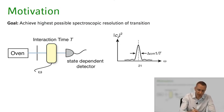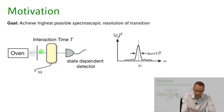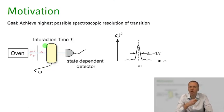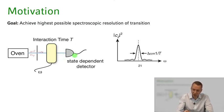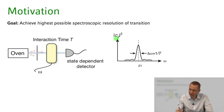This is a typical setup we might consider. You have an oven that spits out particles in the ground state. They fly out with different directions; you only select the ones that propagate in the forward direction. Then you have an interaction zone where your electromagnetic field interacts with the atom, driving a transition from state 1 to an excited state 2. Then you have a state-dependent detector which measures the excited state population.